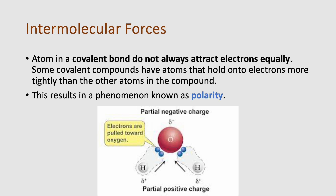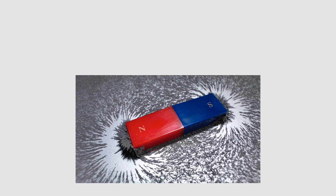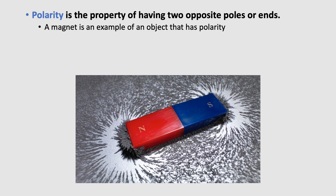Polarity is when we have partial positive and negative charges being pulled toward each end. In our water molecule, the electrons are pulled toward the oxygen atom, making a partially negative charge on that oxygen. Since they're pulled away from the hydrogens, they become partly positive. Polarity is the property of having two opposite poles or ends — just like magnets have a north and a south, creating fields and an intermolecular pull between them.